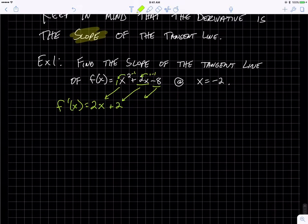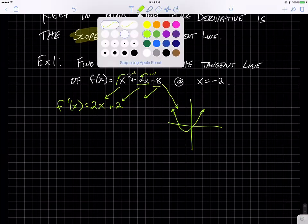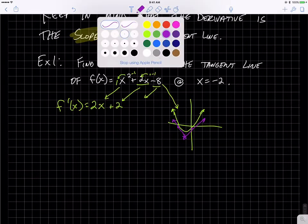That represents, maybe this original graph looks something like this. Remember that 2x plus 2 has to account for all the different tangent lines. That's why it's got to have an x in it. Like, that tangent line has a different slope than this tangent line. So that's why our derivative has an x in it.